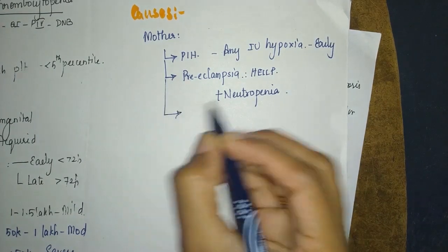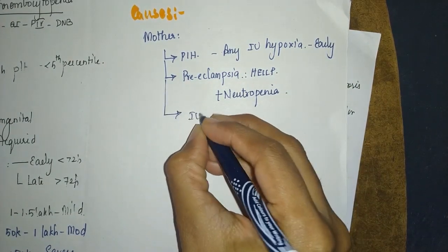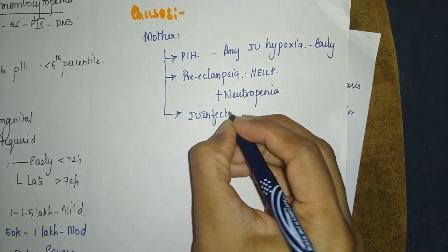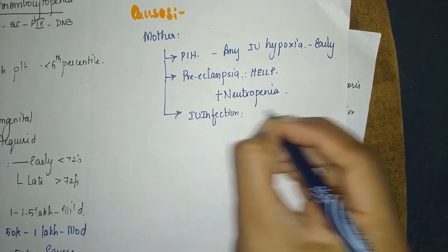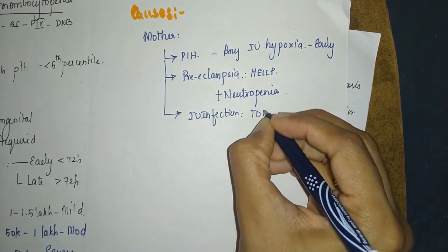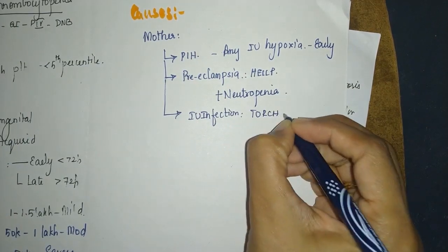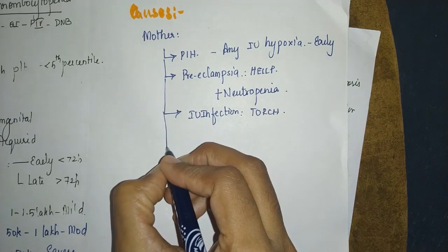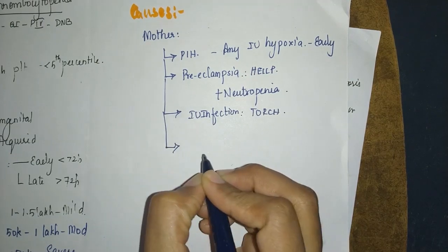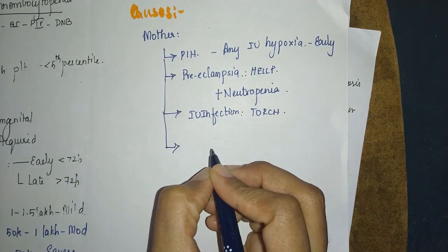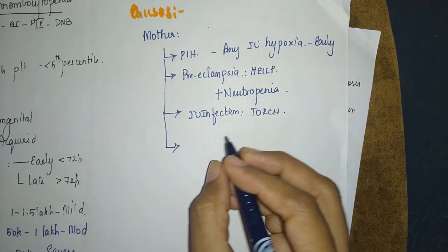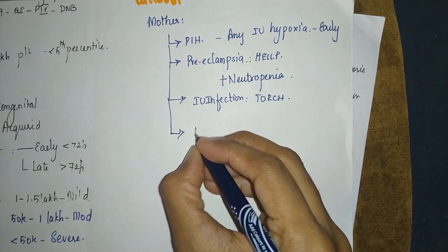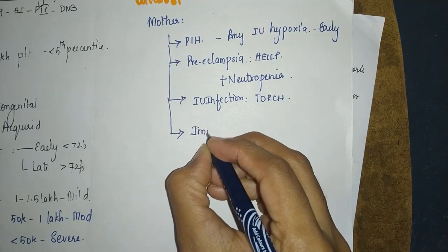Then, any intrauterine infections — your TORCH can cause thrombocytopenia. Don't put Zika in this; Zika does not come here. And any immune thrombocytopenia.